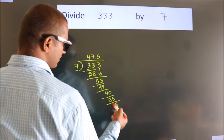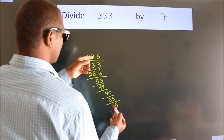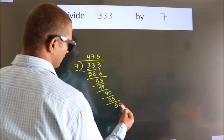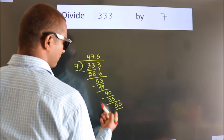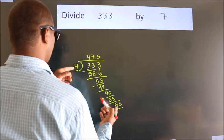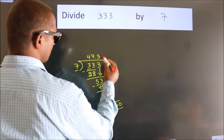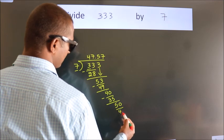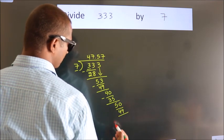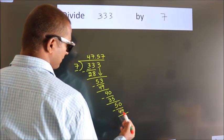After this, we already have the decimal, so directly take 0, so 50. A number close to 50 in 7 table is 7 sevens, 49. Now we subtract. We get 1.